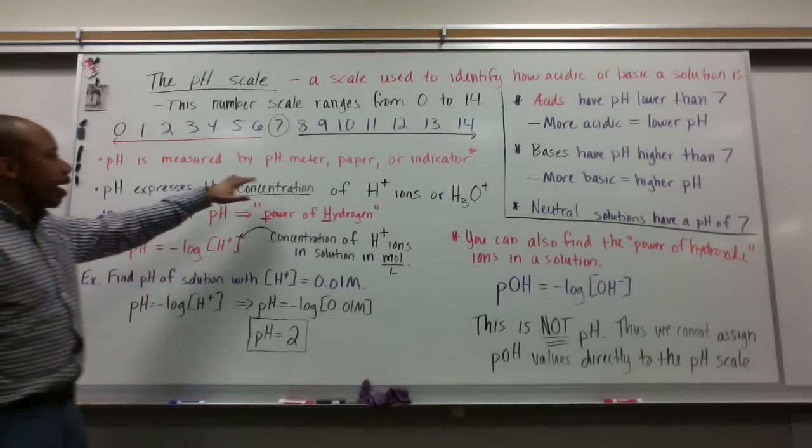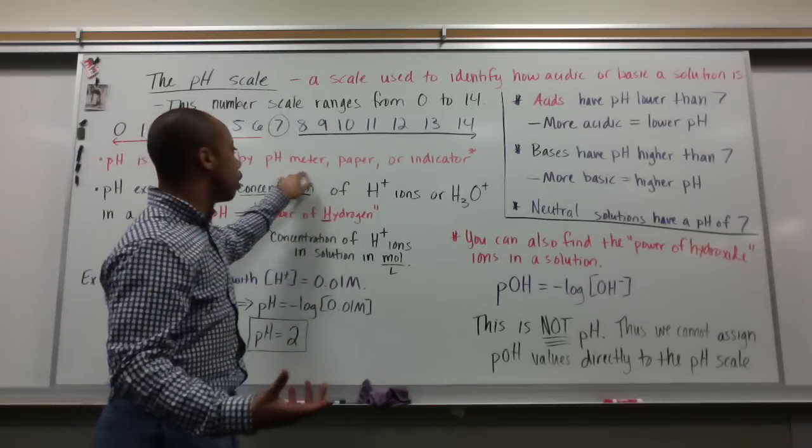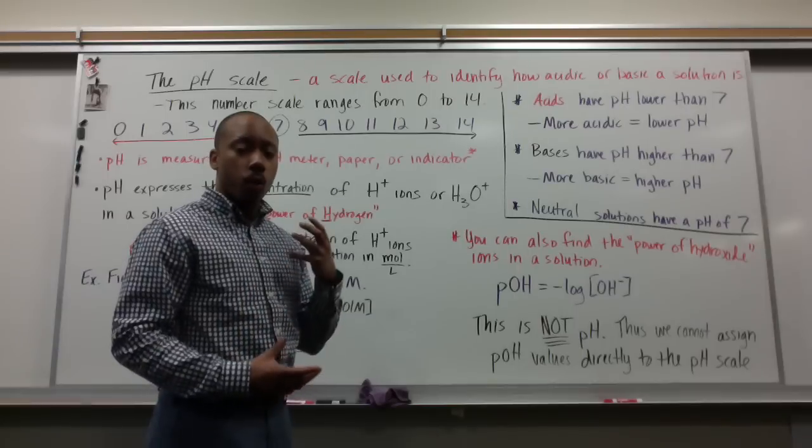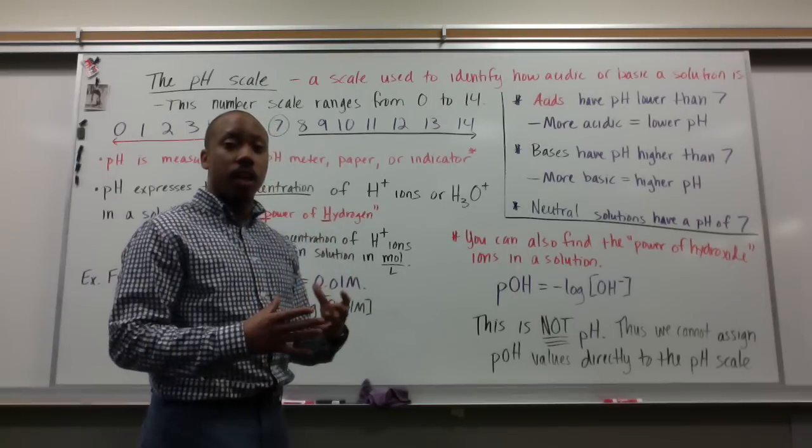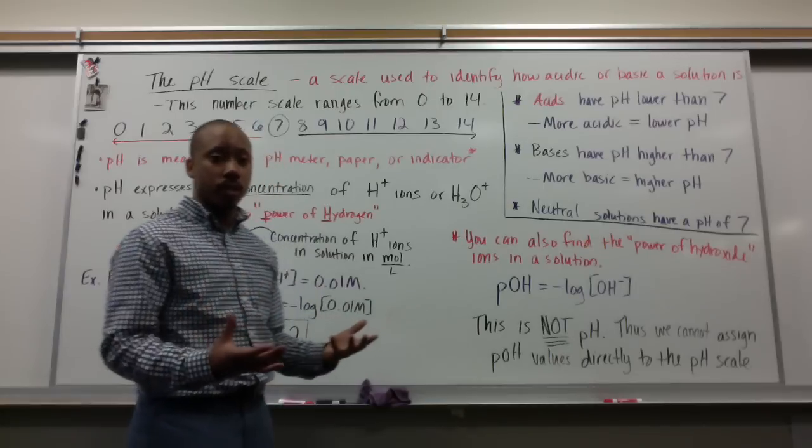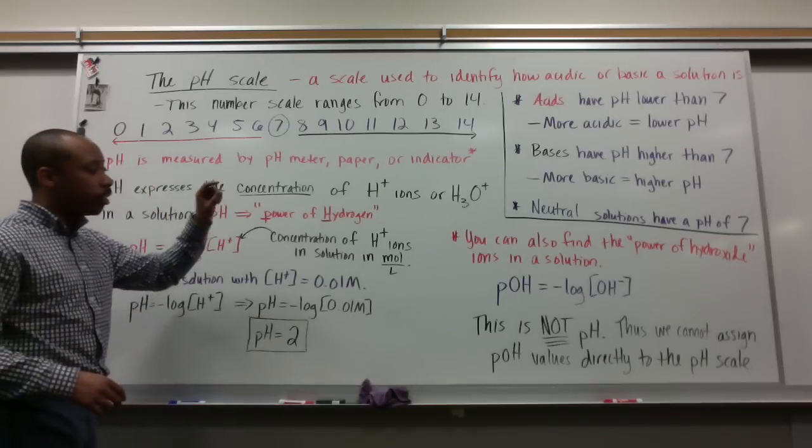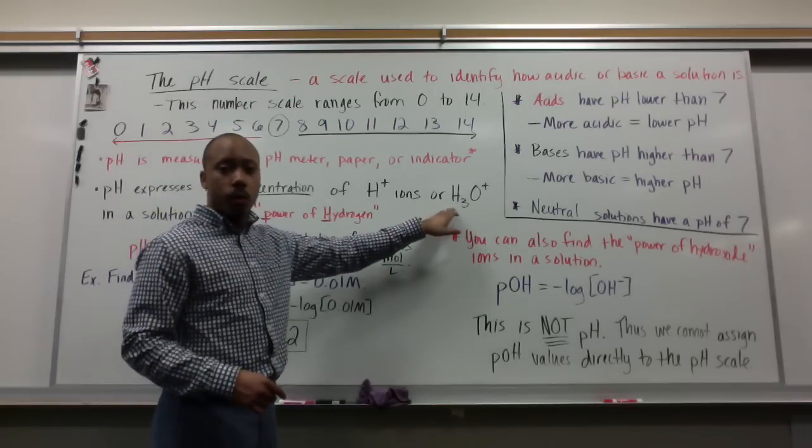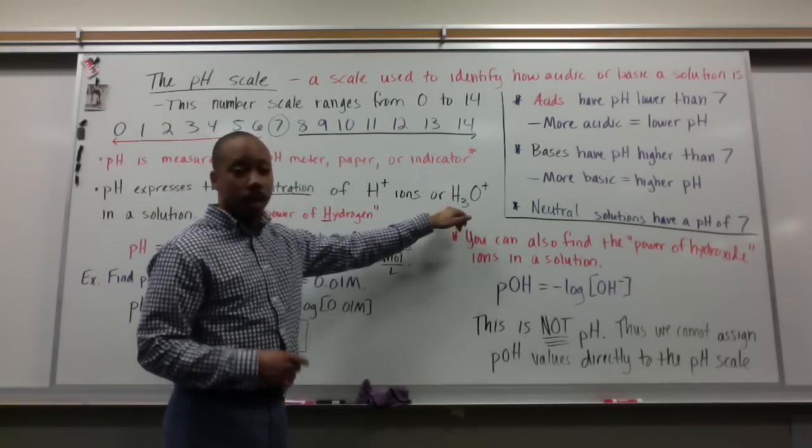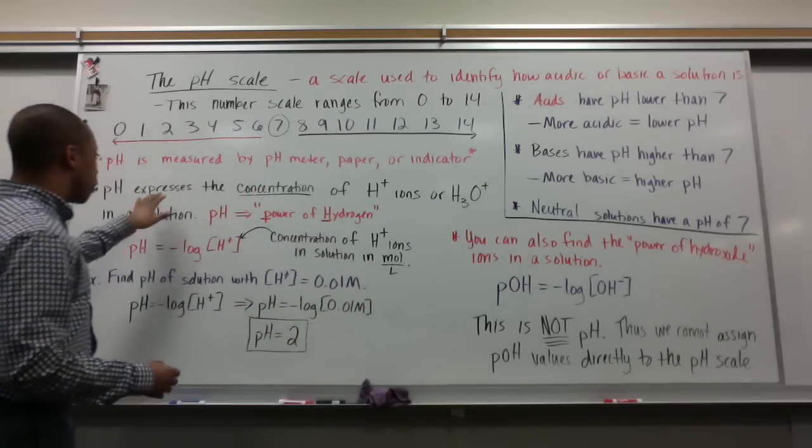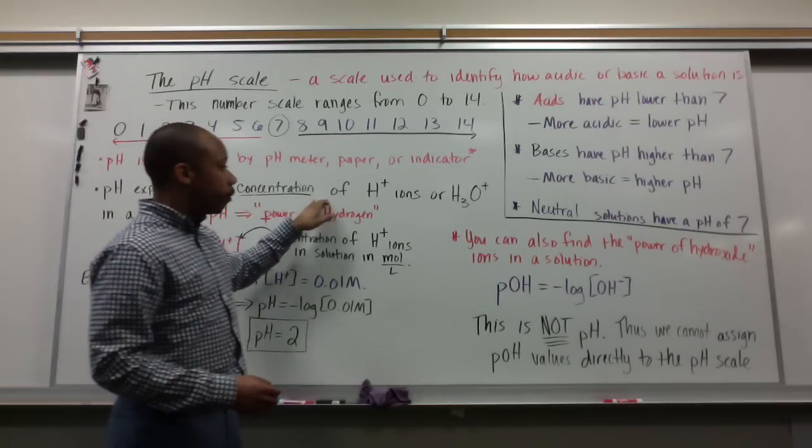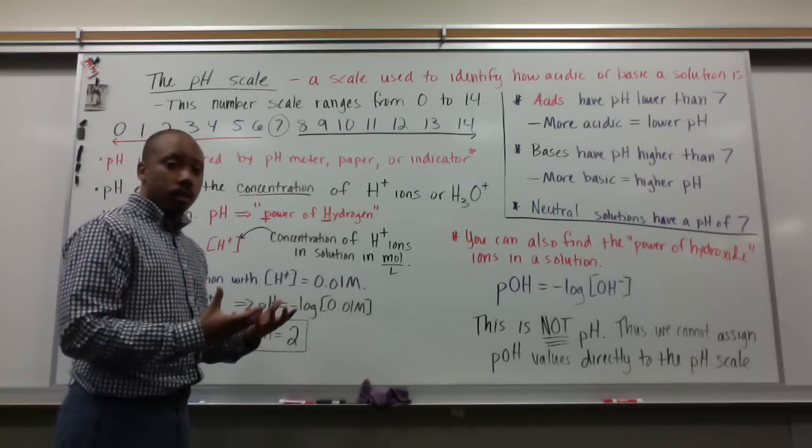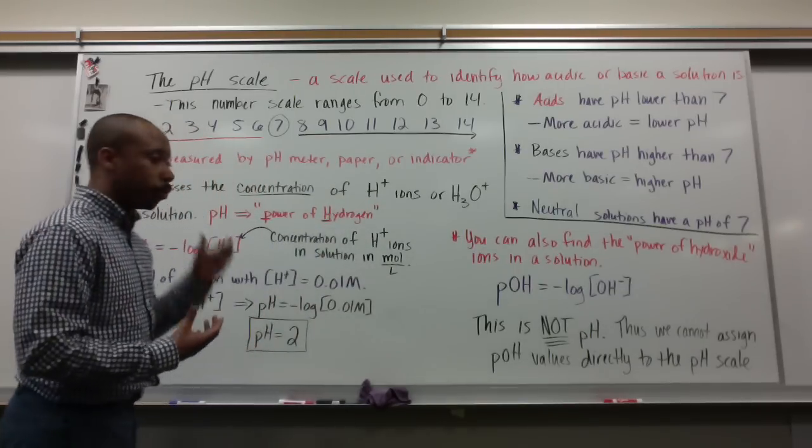pH is measured by using a pH meter, pH paper, litmus paper, or an indicator. An indicator is simply a weak base or weak acid that changes color with varying pH. pH expresses the concentration of hydrogen plus ions or H3O plus - how many moles per liter of hydrogen ions you have in solution. That's what pH is measuring.